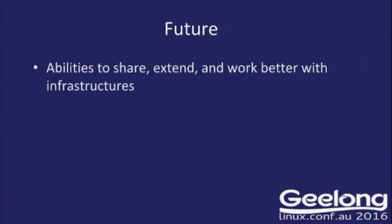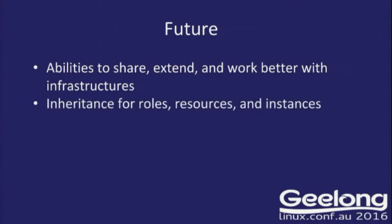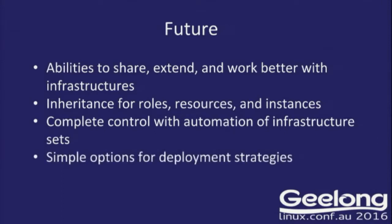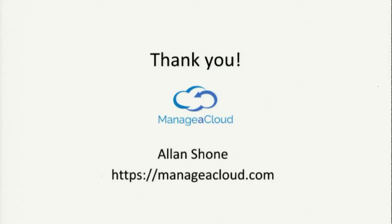Looking to the future — what else do we want? We want better ways to share and extend upon these infrastructures, these code pieces, these tools. We want to be able to work better within the infrastructures themselves. We want inheritance — roles, resources, instances. We want to say I want the same as that instance, just a little bit different. We still want complete control of all of our infrastructure even though it's automated, making sure things are running and ticking over. And we just want it to be simple — it doesn't need to be complex, it doesn't need to be difficult. And that's me done. Questions?